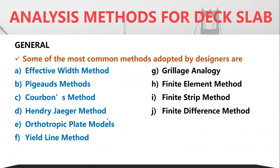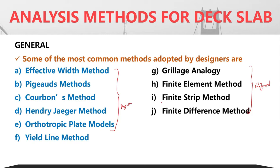The most common adopted methods can be seen here. On the left-hand side are the approximate methods and on the right-hand side are the refined methods. The approximate methods include the effective width method, the Pigott's method, the Corbons method, Henry Yager's method, orthotropic plate models, and yield line methods. In the refined methods, you have the grillage analogy method, finite element method, finite strip method, and finite difference method.